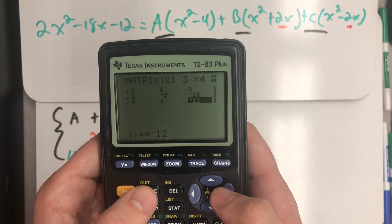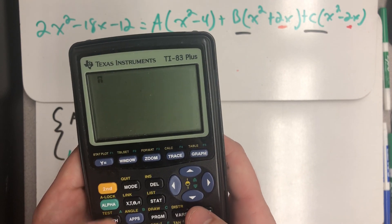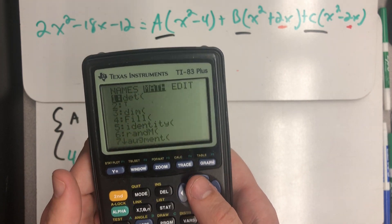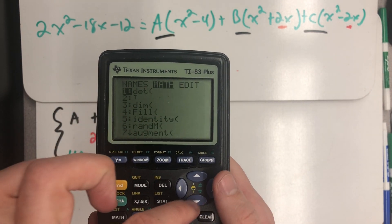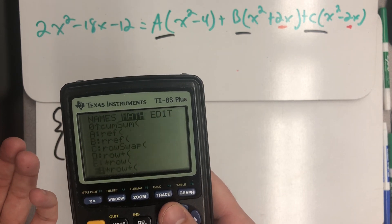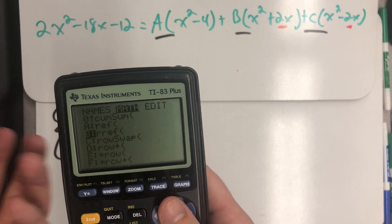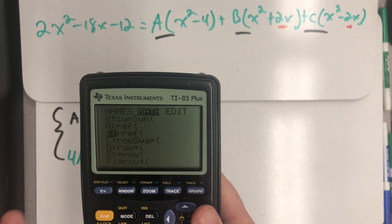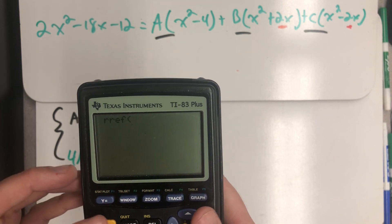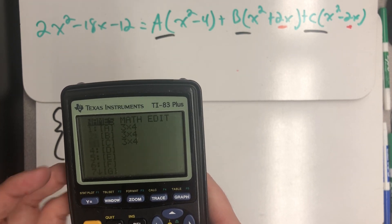I hit second quit to get back out here. Hit second matrix, math. Find RREF. I usually tell people to hit the down arrow but it's actually easier to hit the up arrow until we get to option B. RREF. Enter. And this time I was dealing with matrix C.